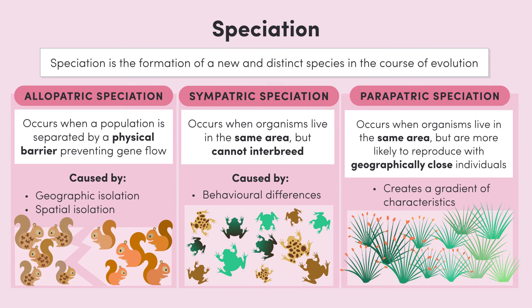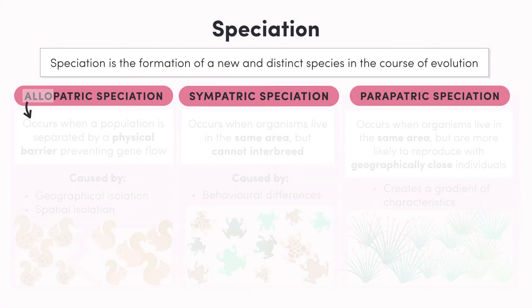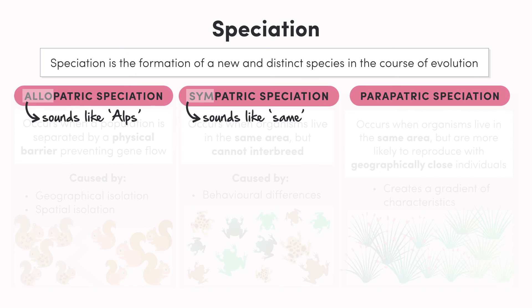Here's a quick way to remember the main difference between the types of speciation. 'Allo' sounds a bit like 'Alps' — imagine a mountain dividing two populations. 'Sym' sounds like 'same' — think about species developing in the same place. 'Para' is a bit like 'panorama' — panoramas involve everything in the same place but take a sweeping view of the area, and one landscape fades into the next, a bit like the characteristics of individuals. That's all we've got time for here. Bye for now.